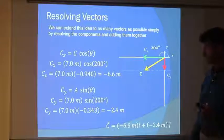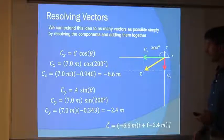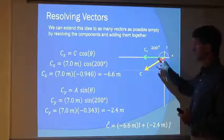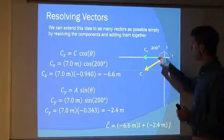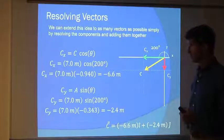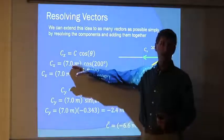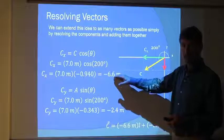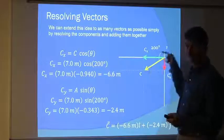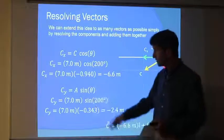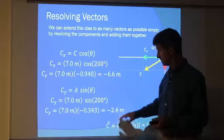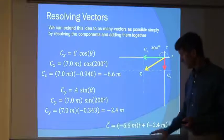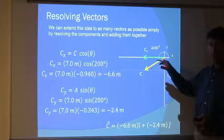So let's resolve another vector. Here's C. It's 7 meters long. Notice, I'm at a 200-degree angle. 180 degrees is the negative x direction. If I go 20 more degrees, I'm at 200 degrees. I take the length of the vector, 7 meters, I multiply it by cosine, negative 6.6 meters. And again, negative, it's pointing the negative x direction. Take the sine of 200 degrees, negative 0.343. Multiply that times 7, I get negative 2.4. So in this case, this vector has both negative x and y components.